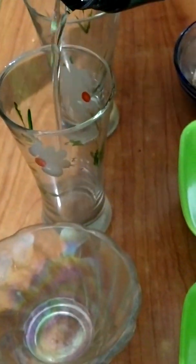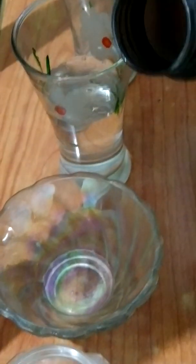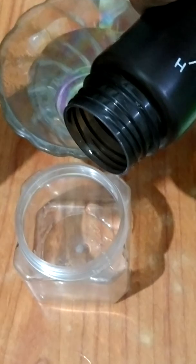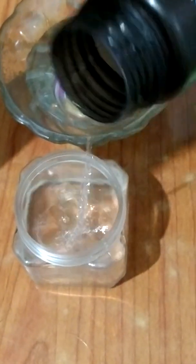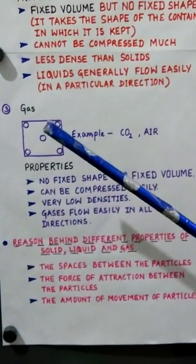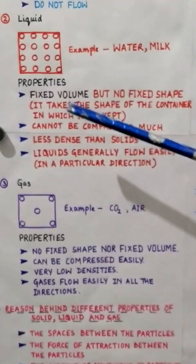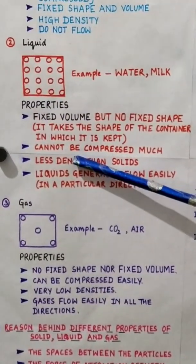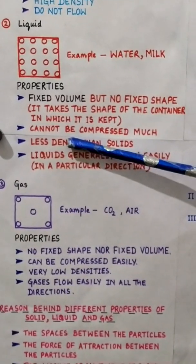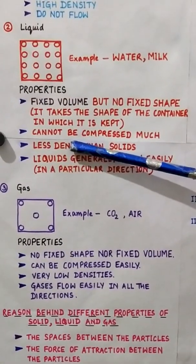When I take water and keep it in a glass, it takes the shape of the glass. When I keep it in a bowl, it takes the shape of a bowl, and when it is kept in a beaker, it takes the shape of that beaker. Liquids cannot be compressed much — liquids have comparatively more space than solids and less than gases, so their compressibility is moderate.